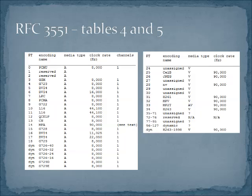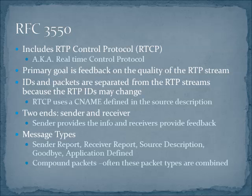RFC 3551 also initially provided the tables used to describe the codecs. Here are two of the codecs pulled right out of RFC tables 4 and 5 from 3551. On the left are the audio codecs, and on the right we've got some of the video codecs. You can see common names here: H.263 for video, G.729, G.722, and PCMA or PCM-MU — those are G.711 versions.